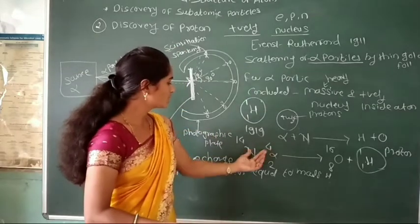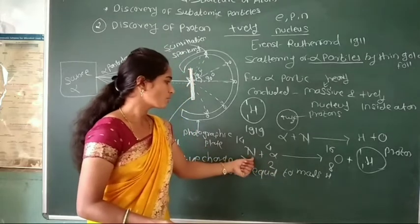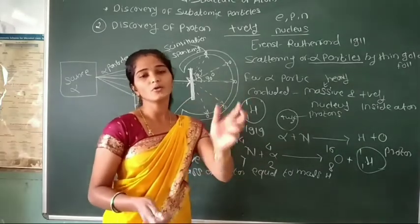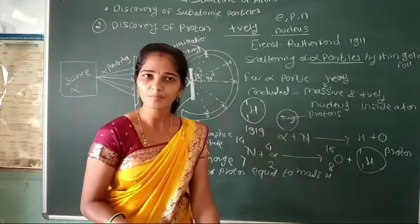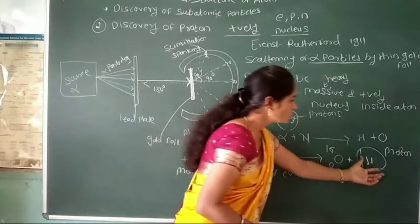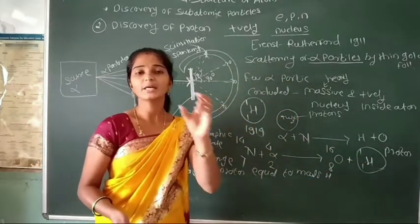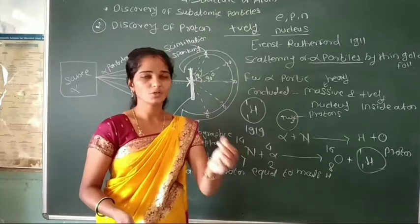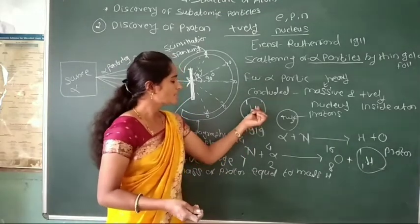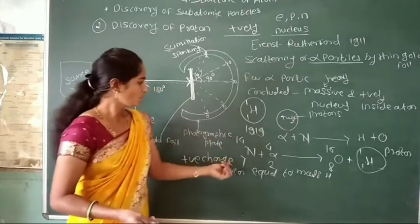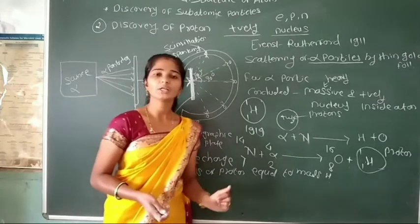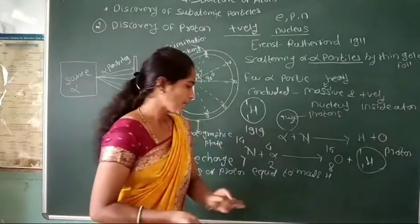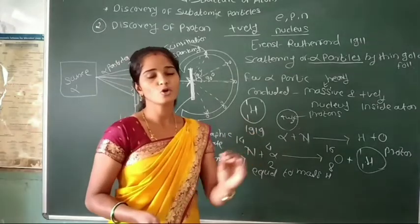Rutherford observed in this reaction that alpha particles strike on nitrogen and there is simultaneous liberation of a hydrogen atom. That means any element bombarded on alpha particle always emits a hydrogen atom. According to this observation, this hydrogen atom is always present inside the nucleus. Because this hydrogen is finalized as a proton and this proton is a positive unit charge particle, it is represented as H 1-1.